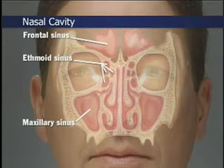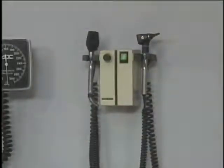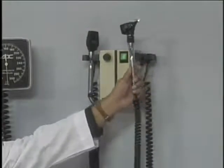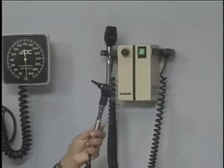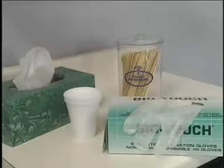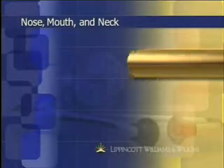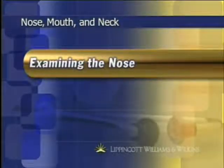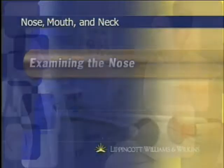Before you start your examination, make sure the equipment is within easy reach, including an otoscope, tongue blades, and gloves. Begin by inspecting the anterior and inferior surfaces of the nose. Note any asymmetry or deformity — some asymmetry of the two sides is normal.